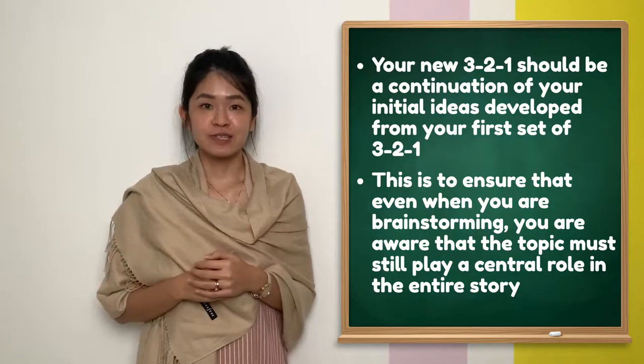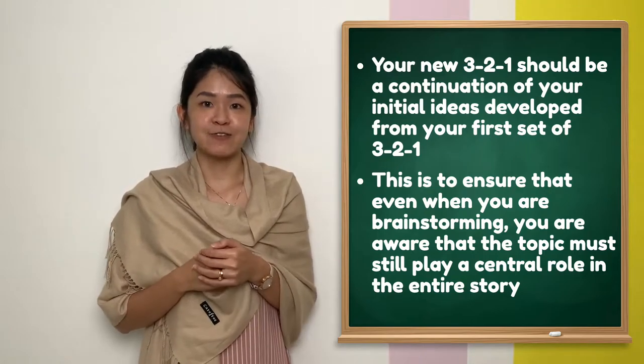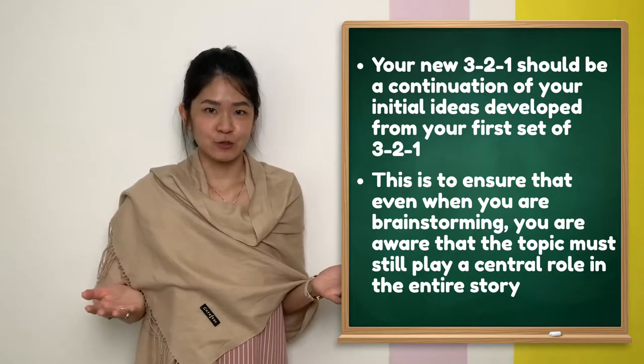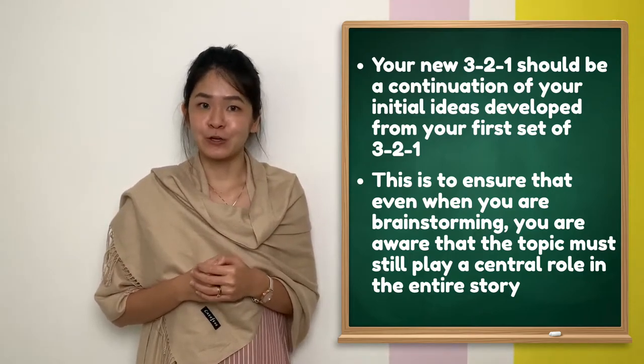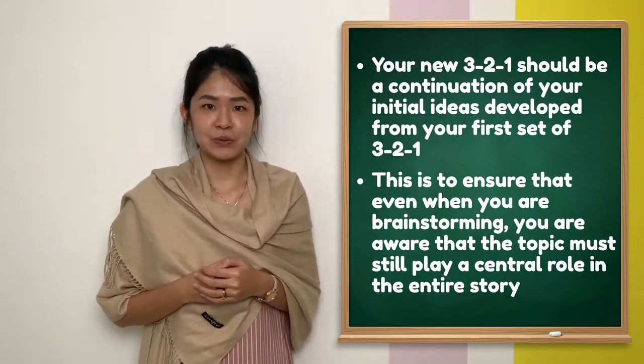Now, your new set of 3-2-1 should be a continuation of your initial ideas developed from your first set of 3-2-1. This is to ensure that even when you are brainstorming for a story when looking at the picture, you are aware that the topic must still play a central role in the story. Looking at this picture of a gift box, my 3 thoughts will be: